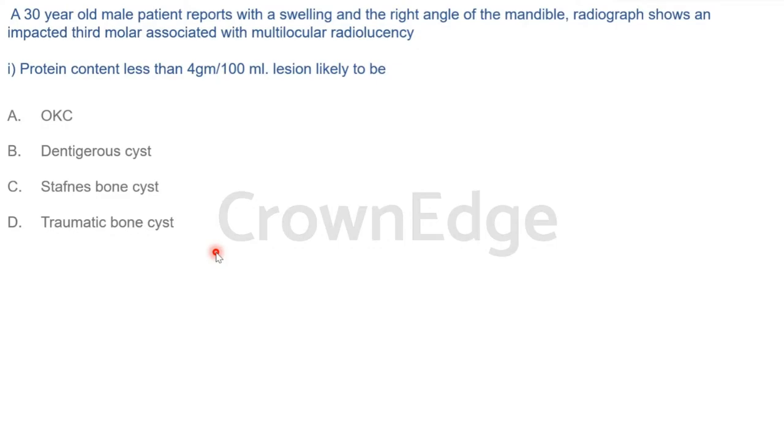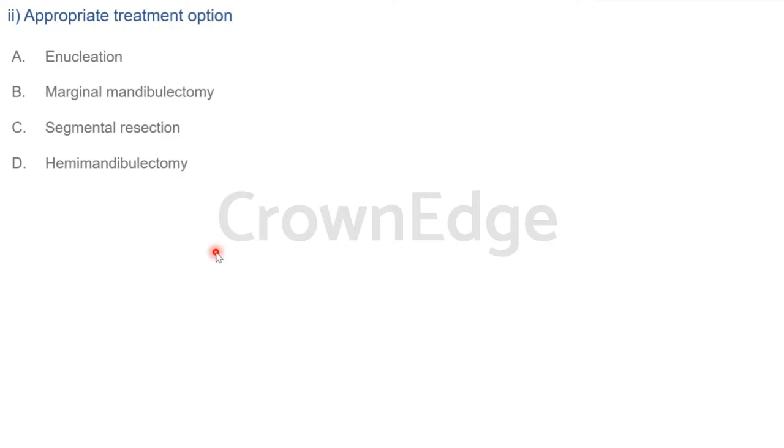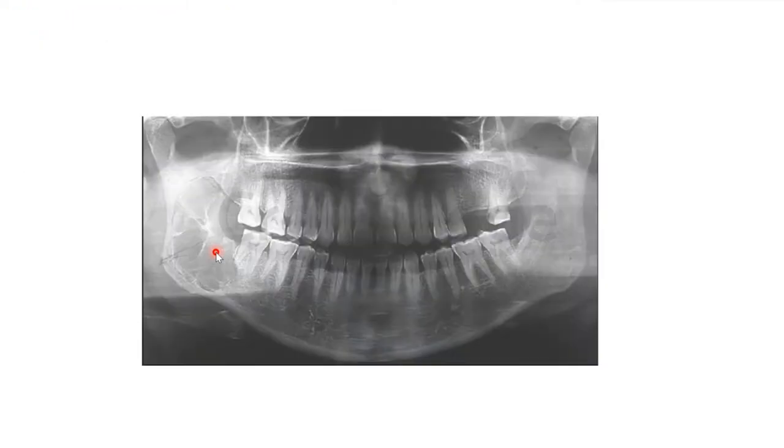Last question: What is the appropriate treatment option for OKC? Options are enucleation, marginal mandibulectomy, segmental resection, and hemimandibulectomy. The answer is A — enucleation. If they simply say it's a swelling without specifying size or proximity to vital structures, go straight for enucleation.